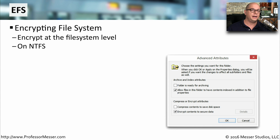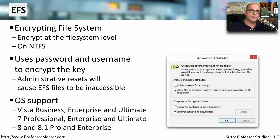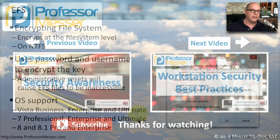If you don't want to encrypt an entire volume but there are still files you would like to encrypt, you can use a file system level encryption called Encrypting File System, or EFS. This is a feature of NTFS that allows you to encrypt at the file system level. The encryption key used by EFS is associated with your username and password, so it's very important that you don't forget your credentials or these files will not be accessible. Even if someone administratively changes your password, since it's something you did not change, the files would still be encrypted and unavailable to anyone. EFS support is available in Vista Business, Enterprise, and Ultimate; Windows 7 Professional, Enterprise, and Ultimate; and Windows 8 and 8.1 Pro and Enterprise editions.